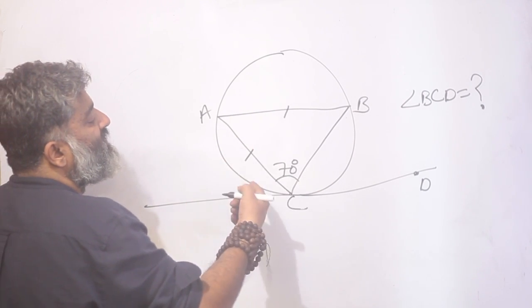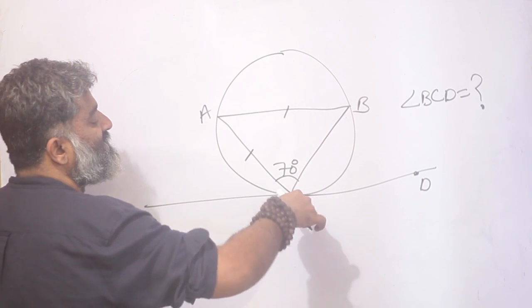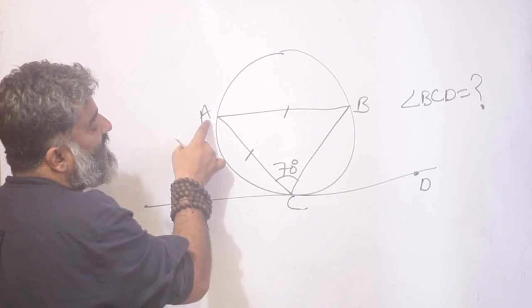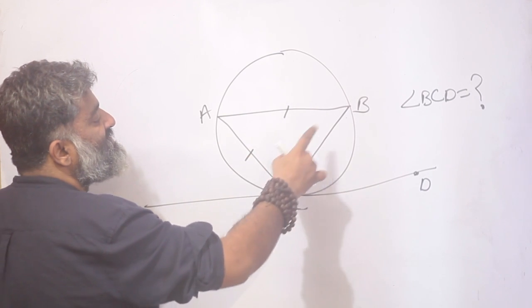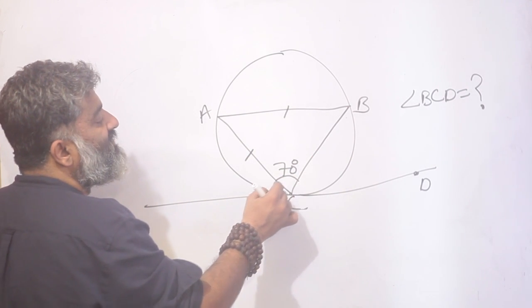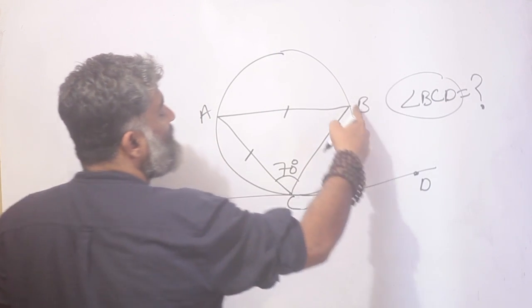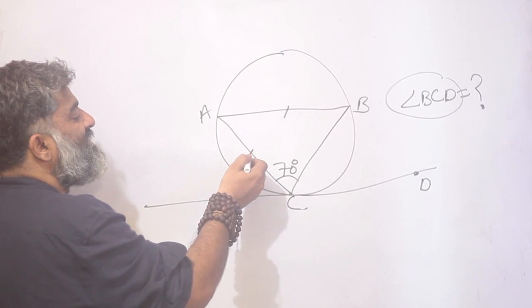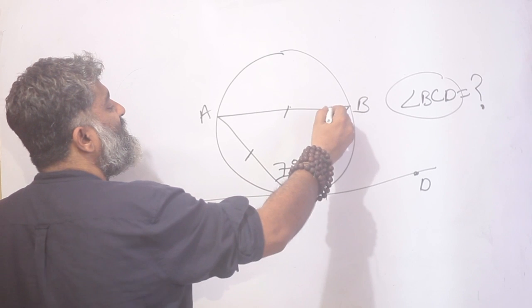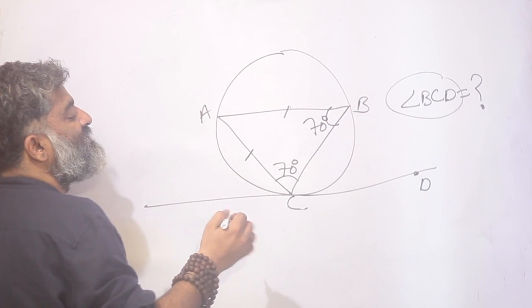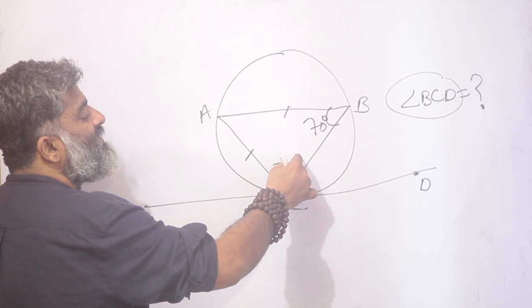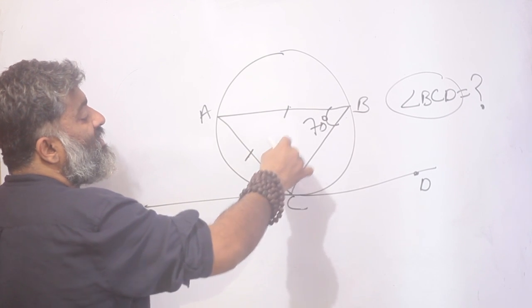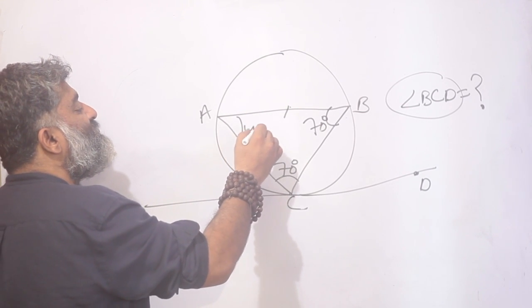The story given to us: there is a triangle ABC inside the circle, and there is a tangent CD touching the circle at C. It is given that AC is equal to AB, so triangle ABC is isosceles, and this angle is given as 70 degrees. The question is: find angle BCD. Starting with basic triangle properties — if these two sides are equal, this angle is also 70 degrees. The two base angles sum to 140 degrees, so the third angle is 40 degrees.